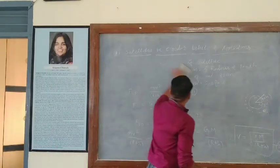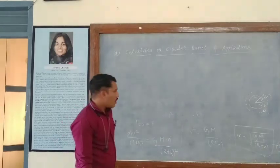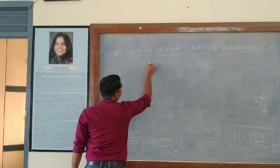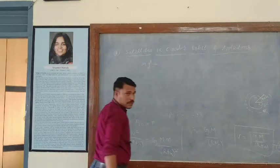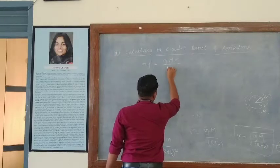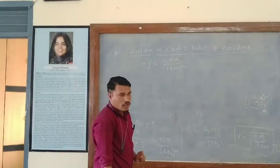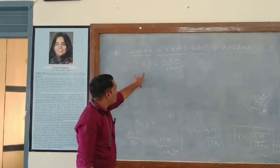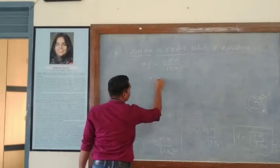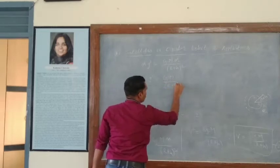Next, we know that the weight of the satellite at height H is given by m times g-dash, which equals the gravitational force: G times M times m upon (R plus H) squared. So m times m cancels and we have g-dash equal to G times M upon (R plus H) squared. This is equation 4, where g-dash is the acceleration due to gravity at height H.